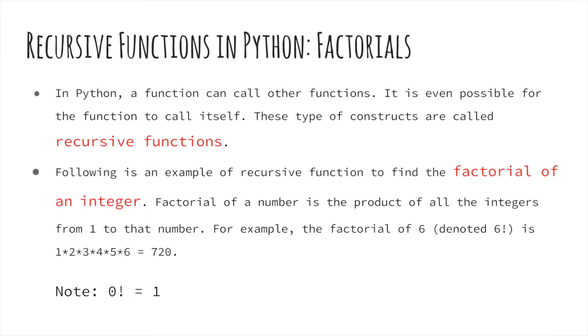We depict n factorial by placing an exclamation mark in front of n. According to the definition of factorials, 6 factorial would be the product of all positive integers less than or equal to 6. That is 1 times 2 times 3 times 4 times 5 times 6, which equals 720. Also note that 0! = 1.